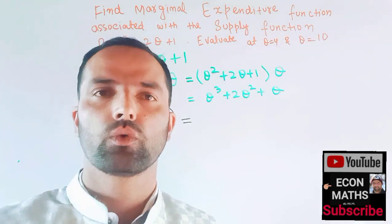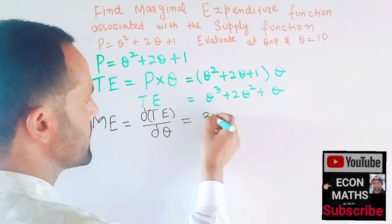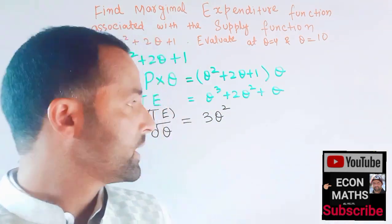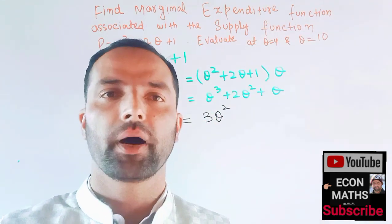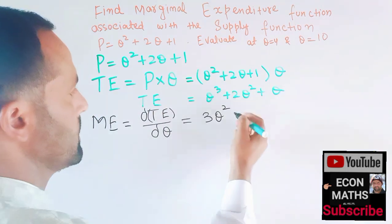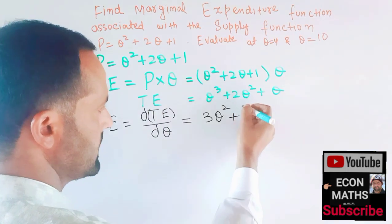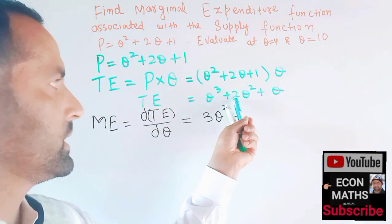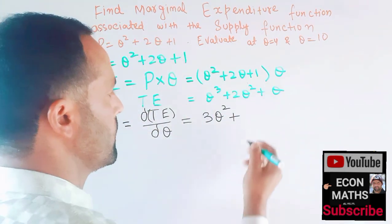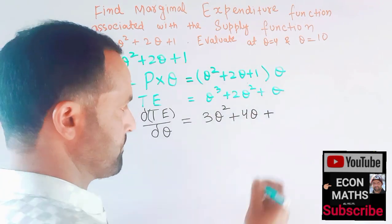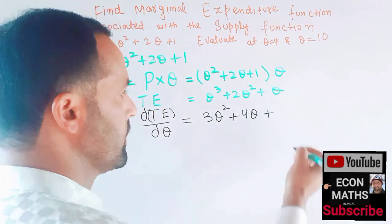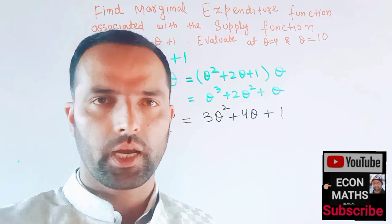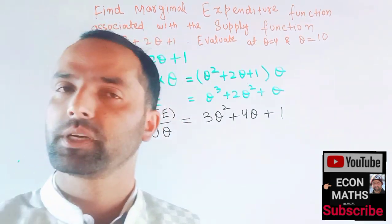Taking the derivative: the derivative of q³ is 3q². By the power rule, the exponent becomes the coefficient and the exponent is reduced by one. Similarly, for 2q², the exponent 2 multiplies with 2 to give 4q. The derivative of q is 1. So our marginal expenditure function is ME = 3q² + 4q + 1.